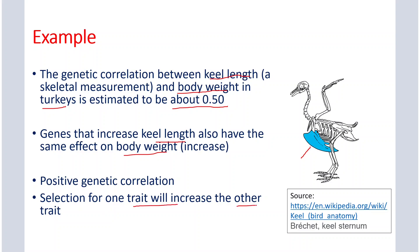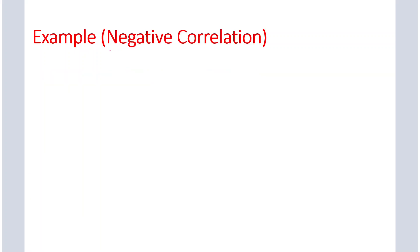When there is a positive genetic correlation between two traits, then the selection for one trait will increase the other trait. So if you select for keel length, the body weight will automatically be increased; or if you select for body weight, the keel length will automatically be improved.